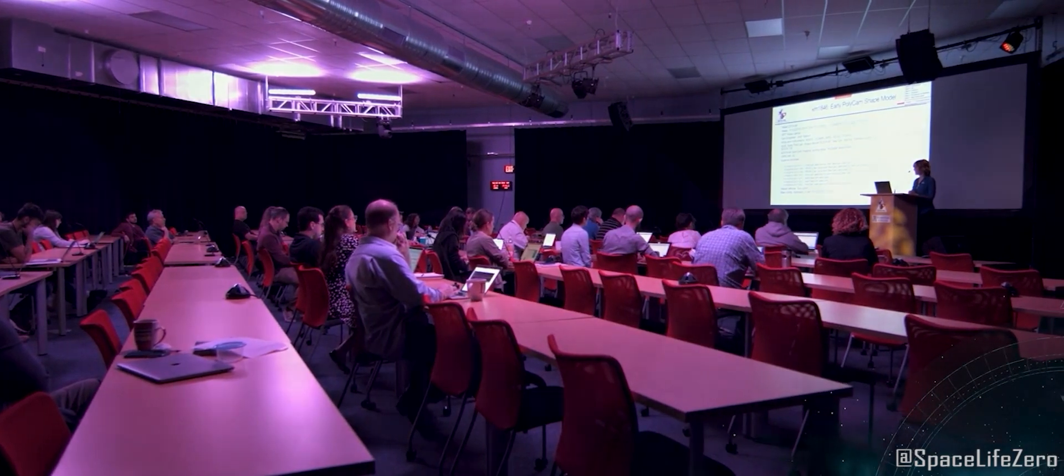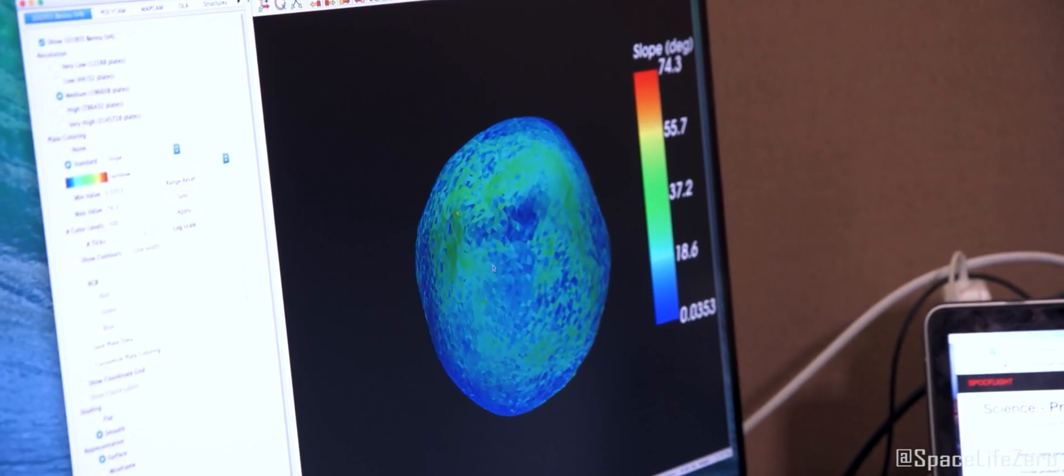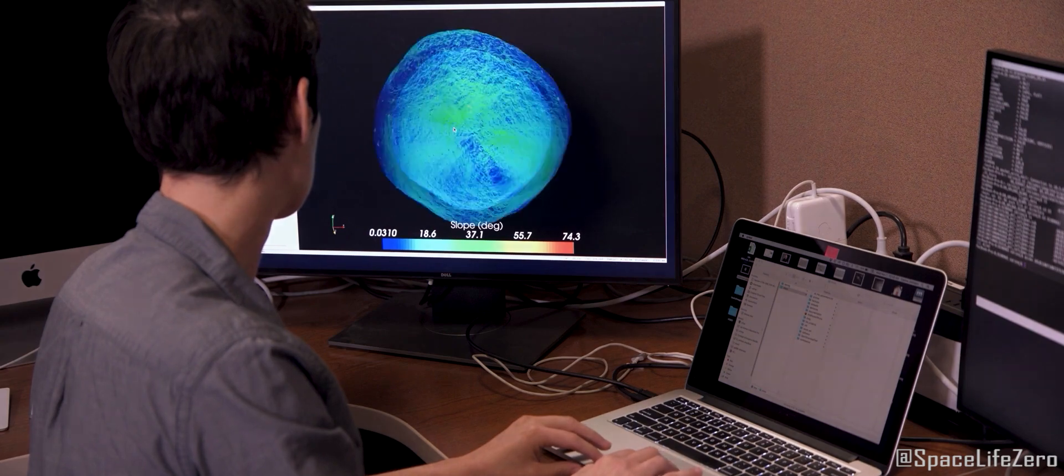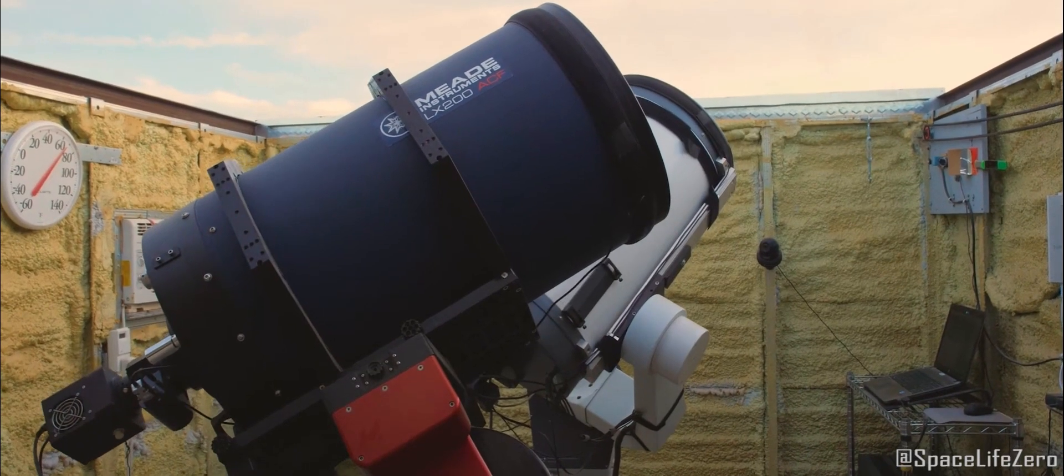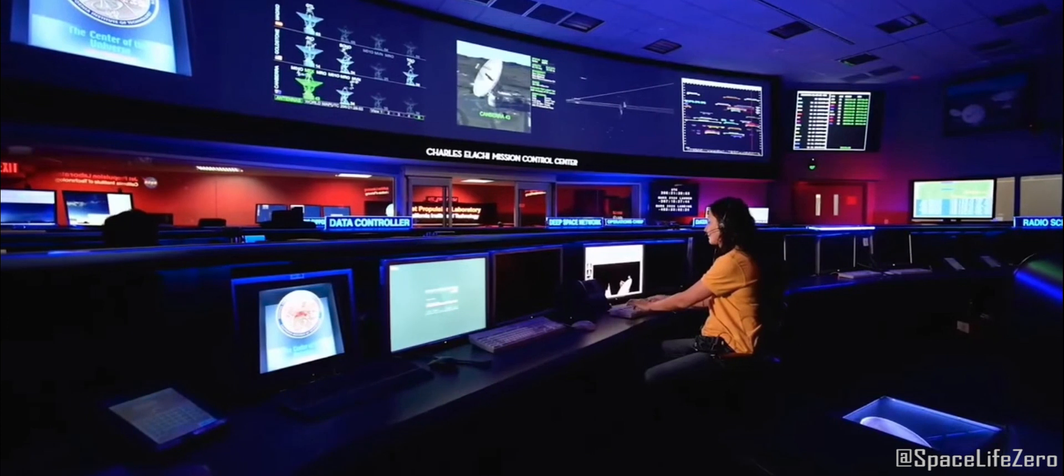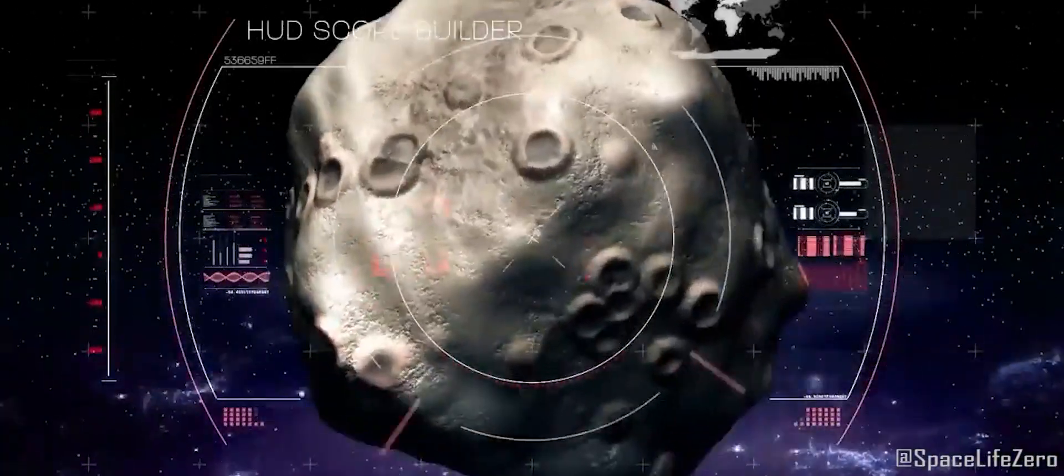NASA and other space agencies around the world closely monitor any asteroid approaching close to our planet. They have advanced telescopes and tracking systems that allow them to predict an asteroid's path with incredible accuracy.